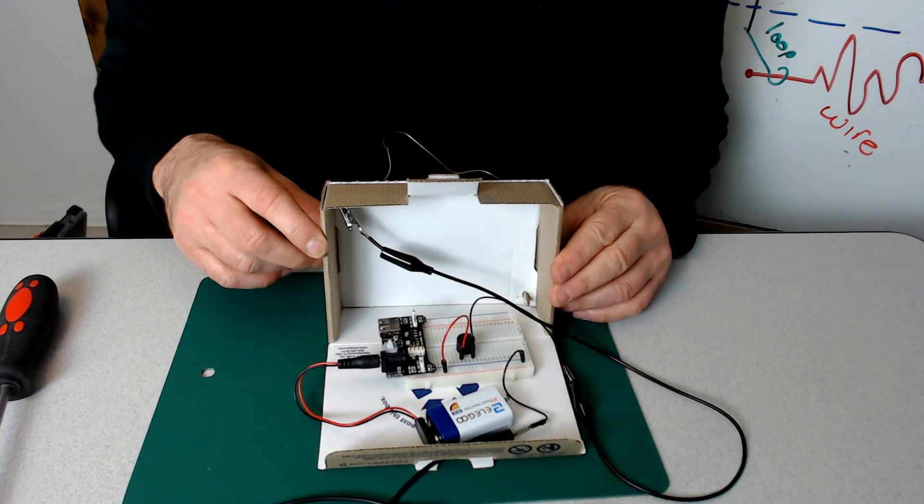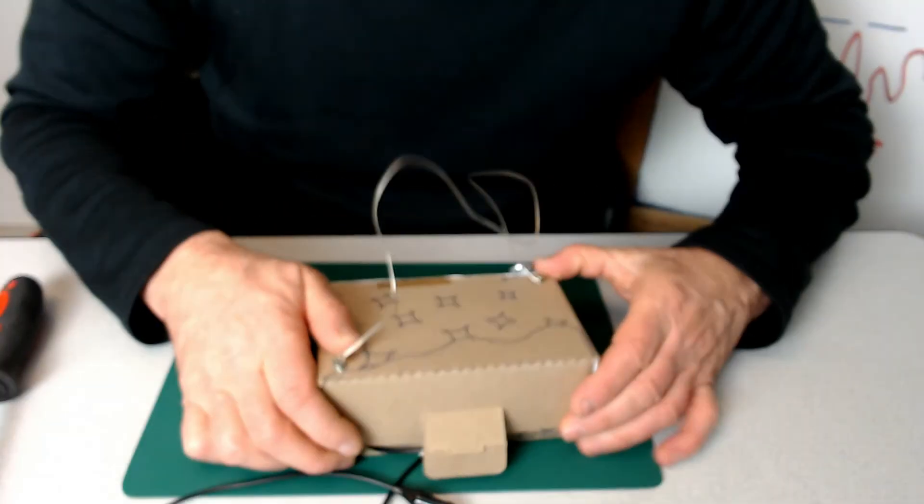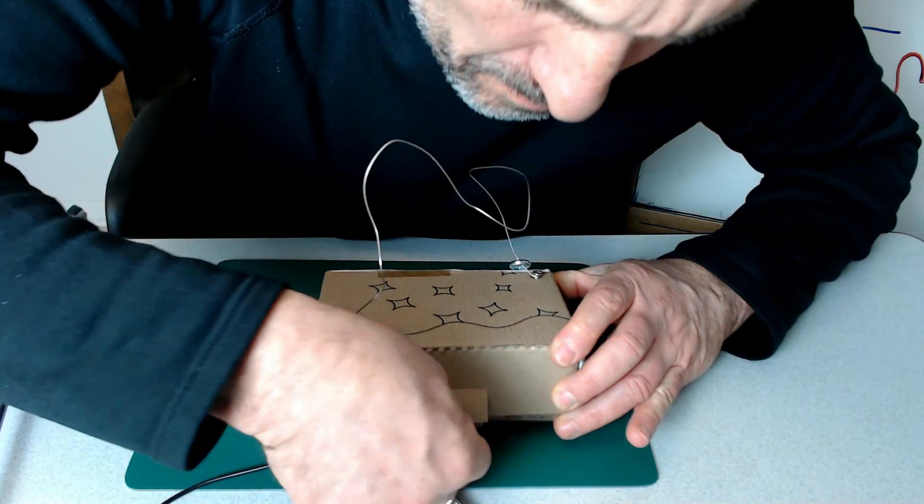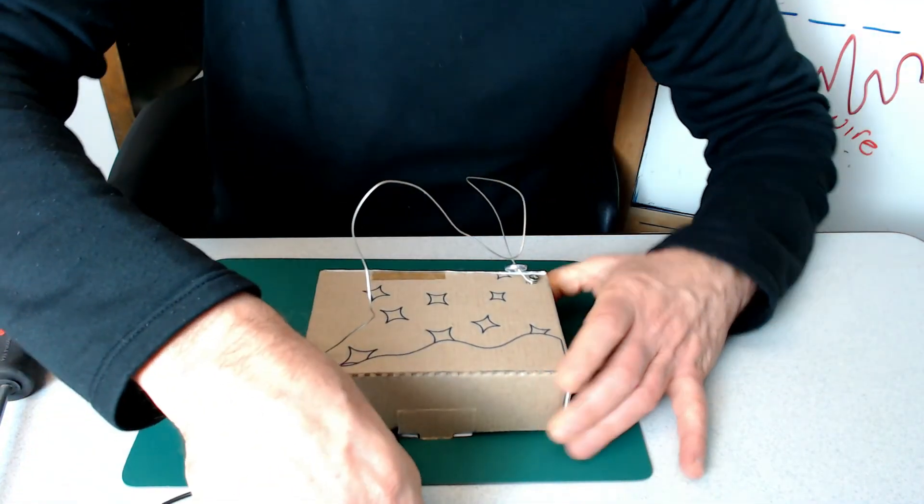Actually, it doesn't really matter which ones you choose. We'll close the box and we'll connect the alligator wire to the metal loop.